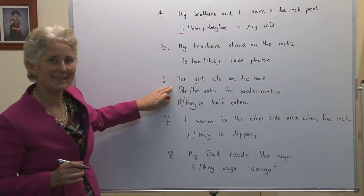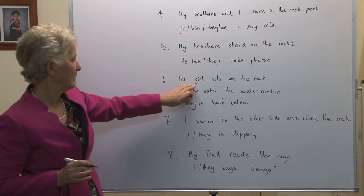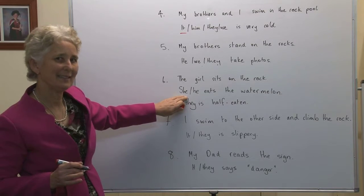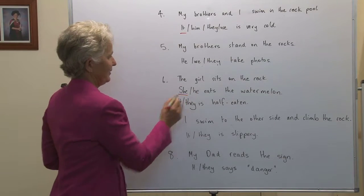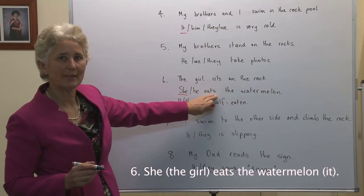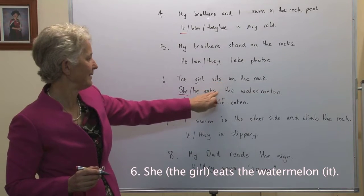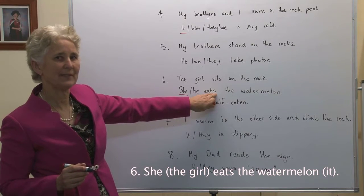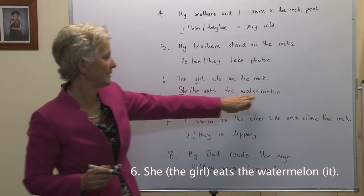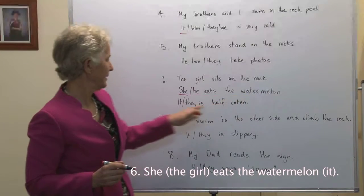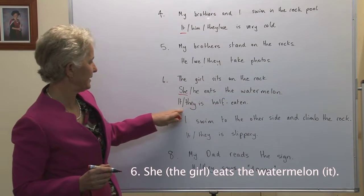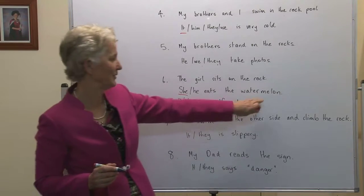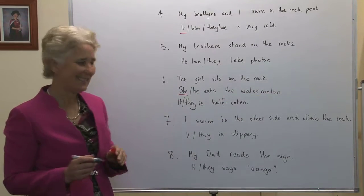The girl sits on the rock. The girl — she or it — is singular. She, a girl. She eats the watermelon. Notice we've got the s in both cases, simple present tense because third person singular. It is half eaten — it or they, he, she or it. It is referring to the watermelon. It is half eaten.